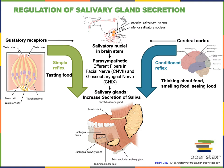The salivary glands are regulated by a simple reflex initiated by the gustatory receptors detecting food in the mouth. The gustatory receptors relay information through the afferent pathway in the facial nerve to the integration centers in the brain stem. The salivatory nuclei in the brain stem include the superior salivatory nucleus and inferior salivatory nucleus.